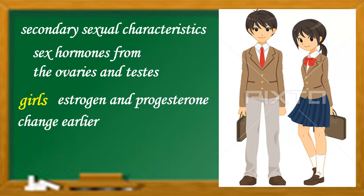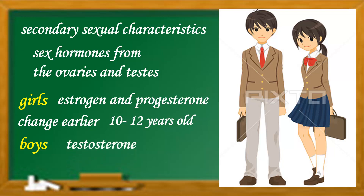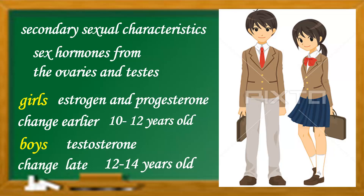For girls, it starts at 10 to 12 years old. For boys, they experience an increase in the production of testosterone at the age of 12 to 14 years old, so the change is later than in girls.